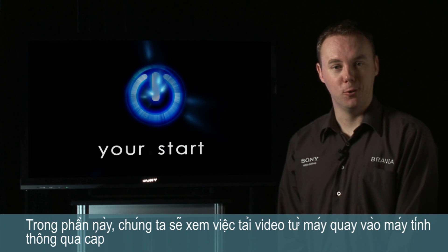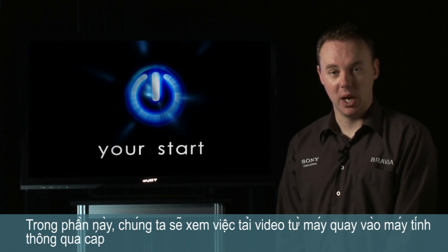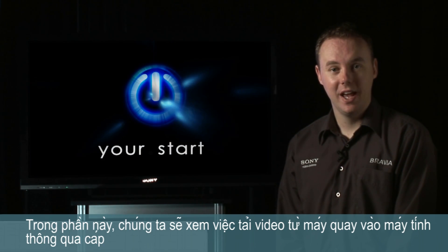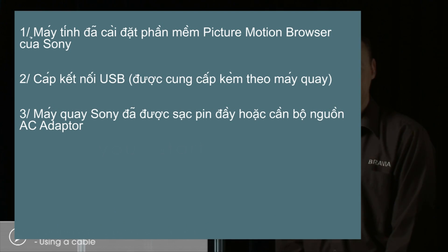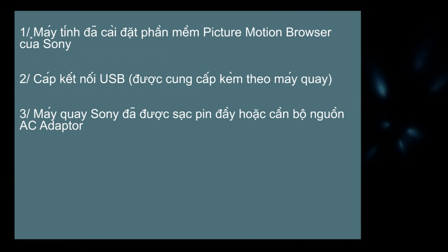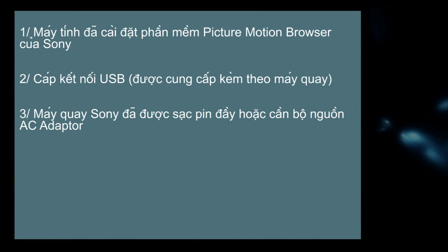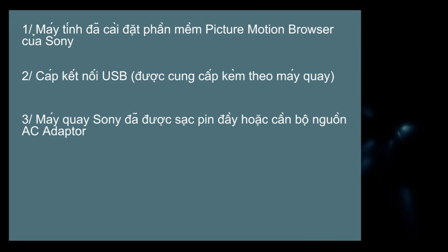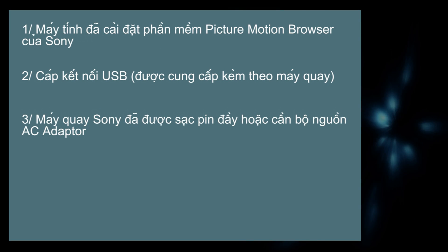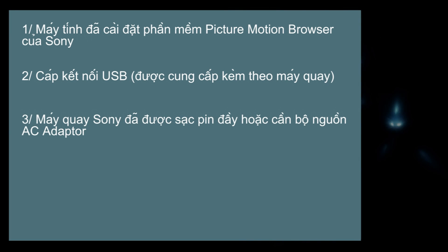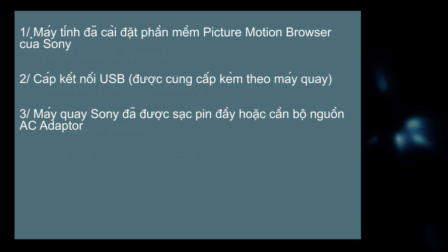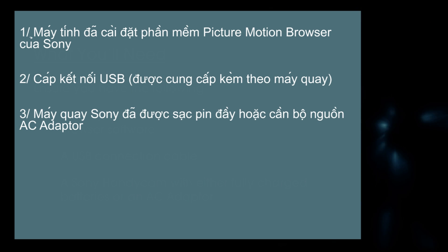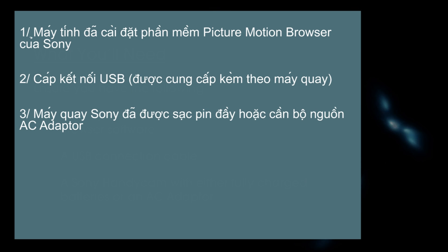In this section we'll look at importing videos from your Handycam to your computer by connecting a cable. Ensure you have the following: a computer installed with Sony's Picture Motion Browser software, a USB connection cable — this would have been supplied with your Handycam — and a Sony Handycam with either fully charged batteries or an AC adapter.